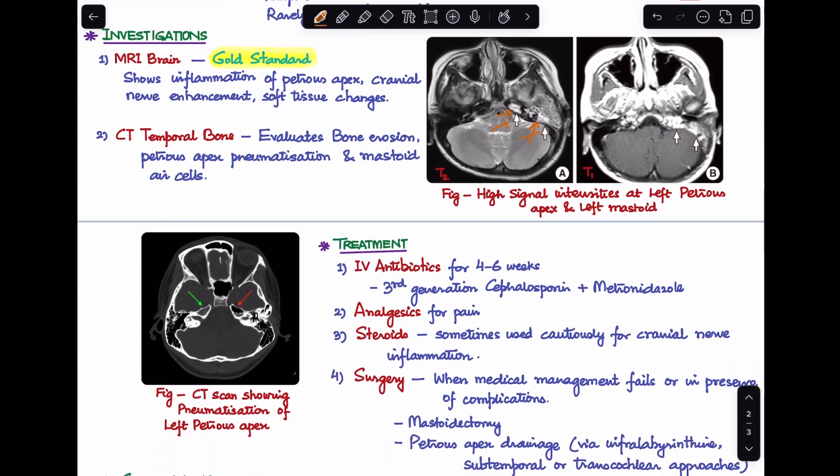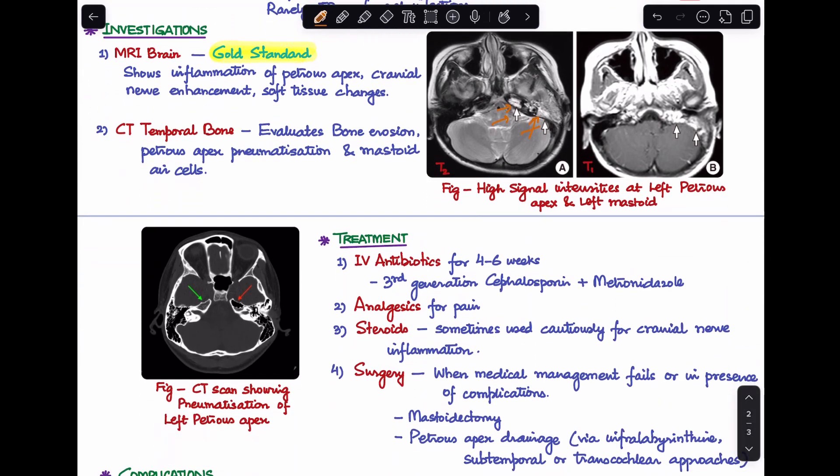The second investigation that is important is the CT scan of the temporal bone. This will help you in evaluating the bony erosion, petrous apex pneumatization, and mastoid air cells. If you see in the image CT scan over here on the left side petrous bone, we can see that there is pneumatization of the petrous apex. It has been seen that pneumatized petrous apex is more at risk of developing petrositis than any other type like sclerotic or diploic.